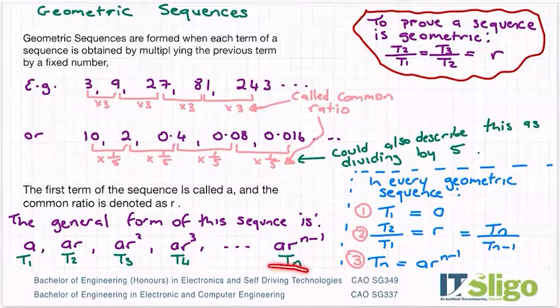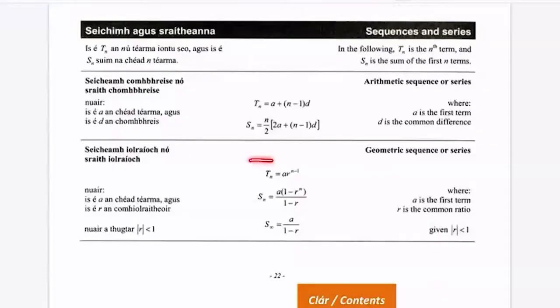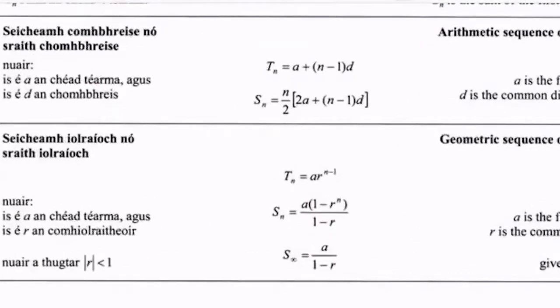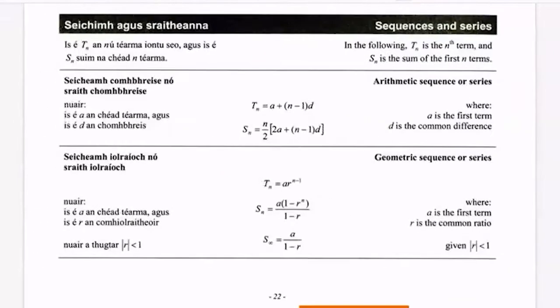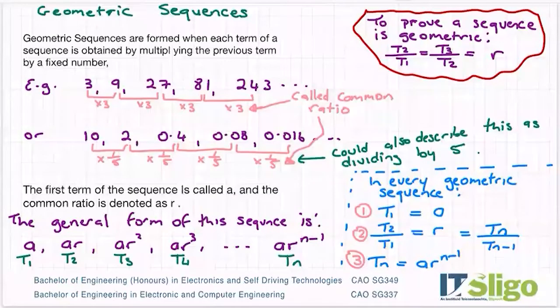That's why when you get to tn, it is a r to the power of n minus one. It's here in the log tables - the general form of a geometric sequence, or if you were to generate a formula to give you the nth term, this is what you would use: a r to the power of n minus one. So that's the general form of a sequence.